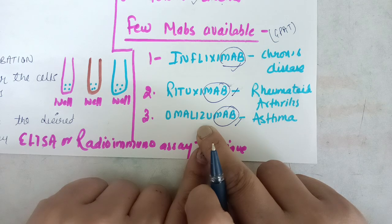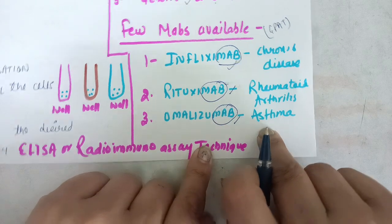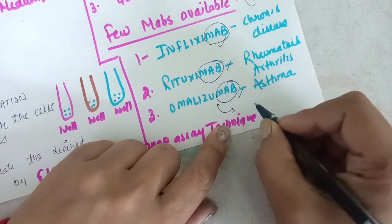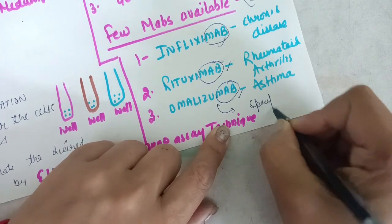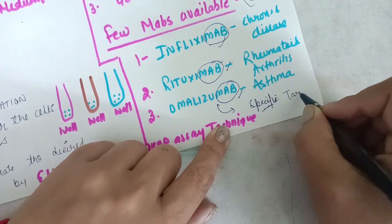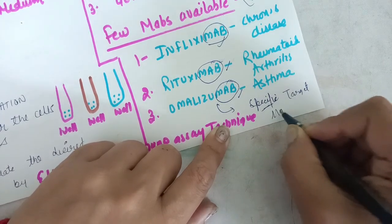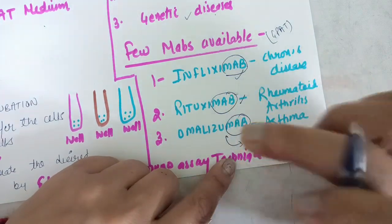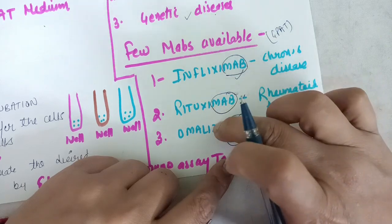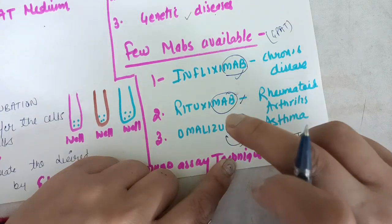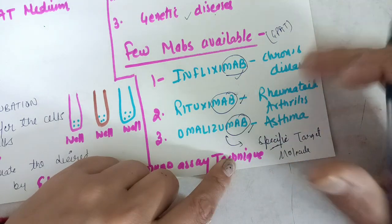In this technology we will fuse the B cell with the myeloma cell. The B cell can produce antibody, and the myeloma cell can also produce antibody. But what is the myeloma cell? It is a cancerous cell. We need a cell which can produce antibody — that is the B cell — but the problem is it is not immortal. So we take a myeloma cell which is immortal, meaning it can live forever. We will fuse these two cells together.